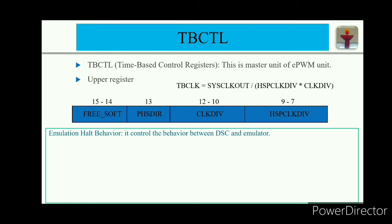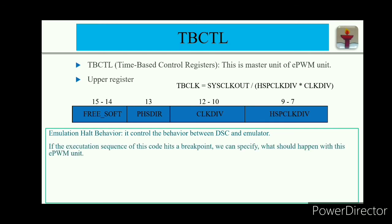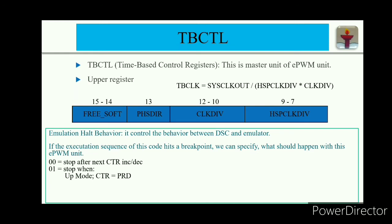If the execution sequence hits a breakpoint, we can specify what happens to the EPWM unit. Using 00 stops execution after the next counter increment or decrement. Using 01: in count-up mode the counter stops when it reaches the period; in count-down mode it stops at 0; in up-down mode it stops when the counter reaches 0. Writing 1x means execution does not stop.